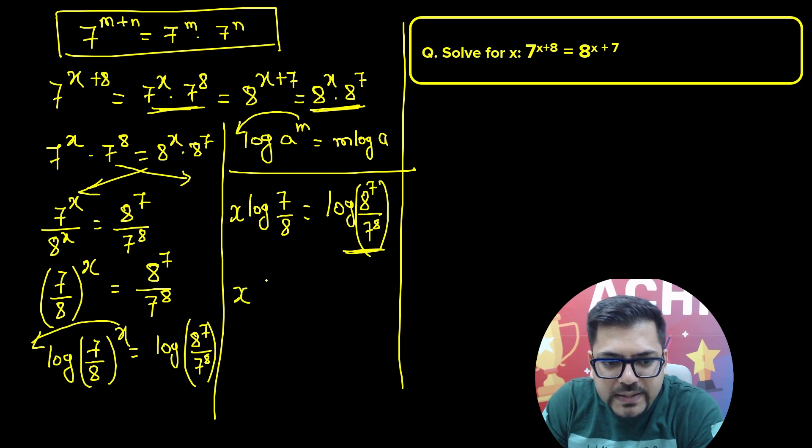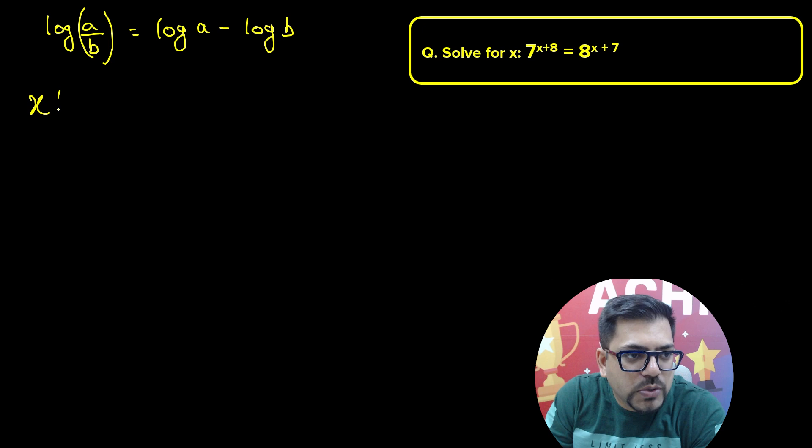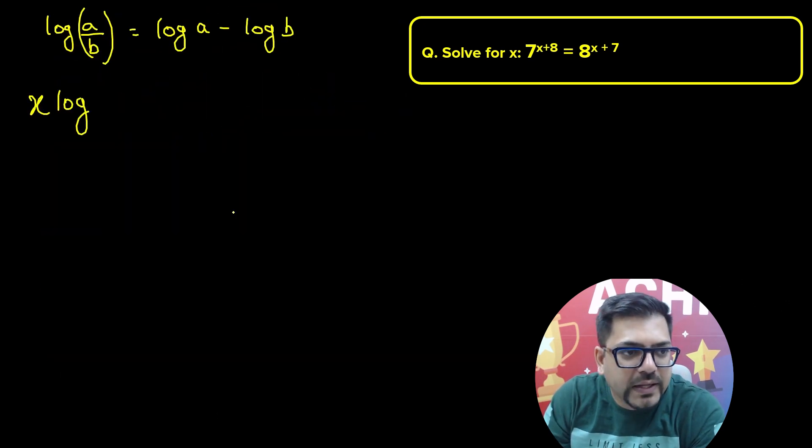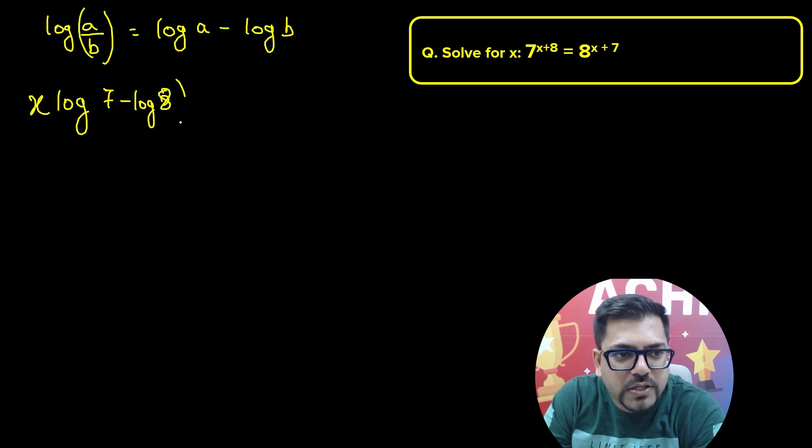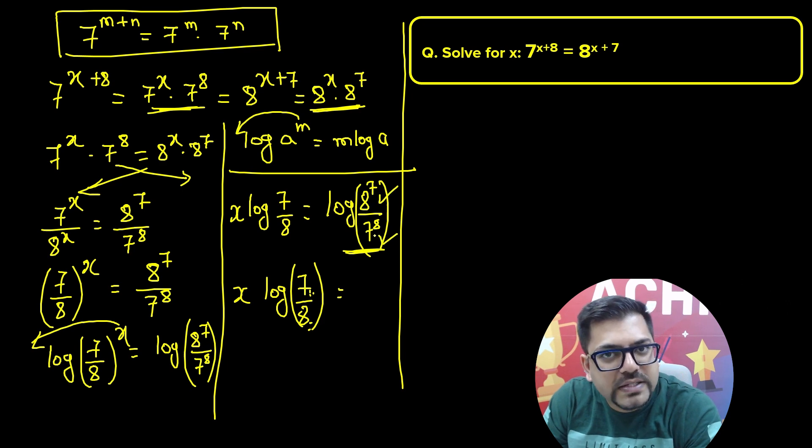We have x times log 7 divided by 8, which equals—I'll write it here. We have x times log of 7 by 8, which can be written as log 7 minus log 8, because we've seen this property that whenever we have a division we simply subtract it. Similarly on the right hand side, log 8 to the power 7 divided by log 7 to the power 8.